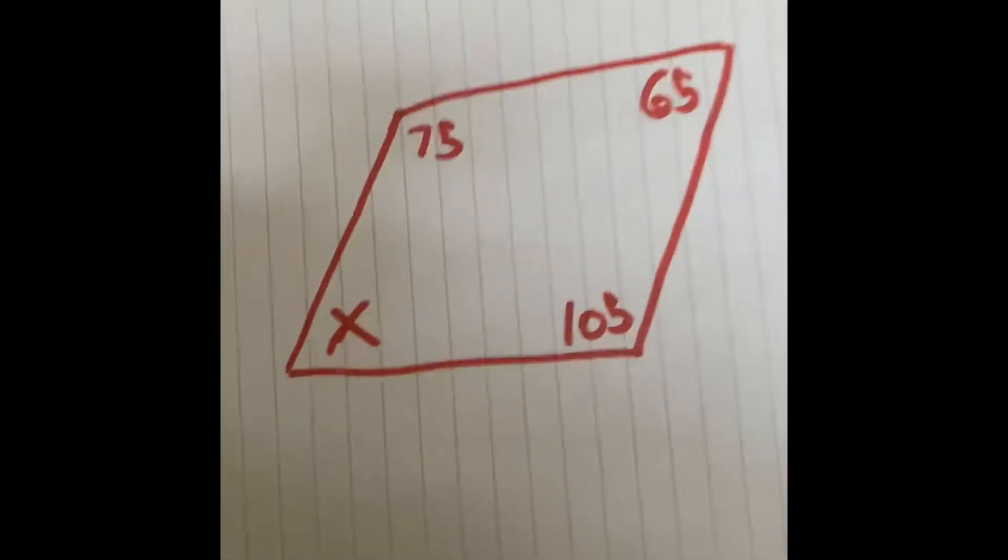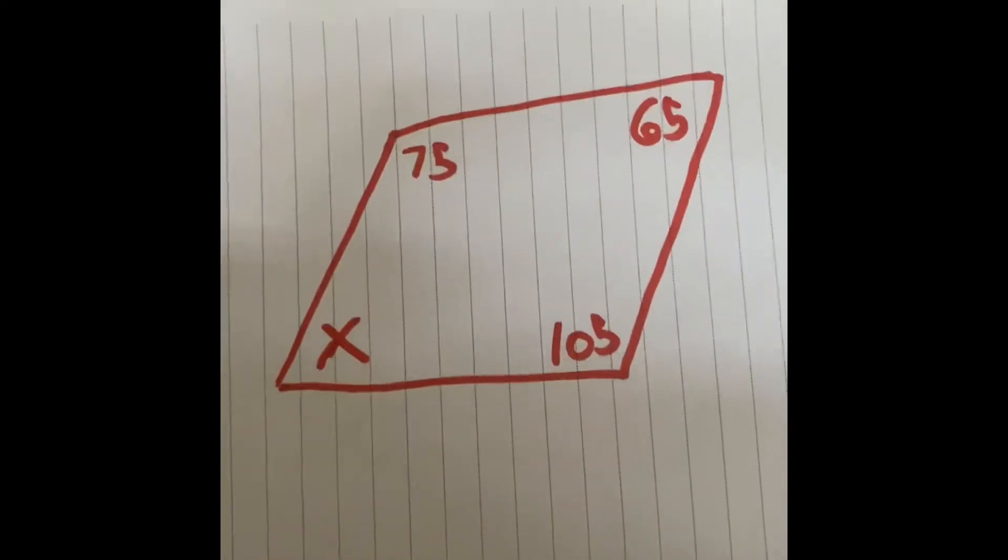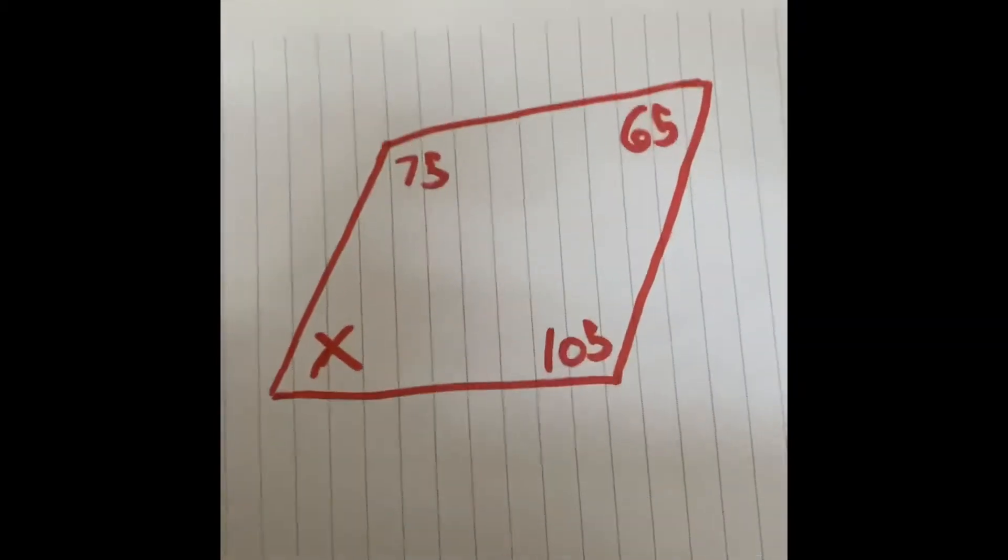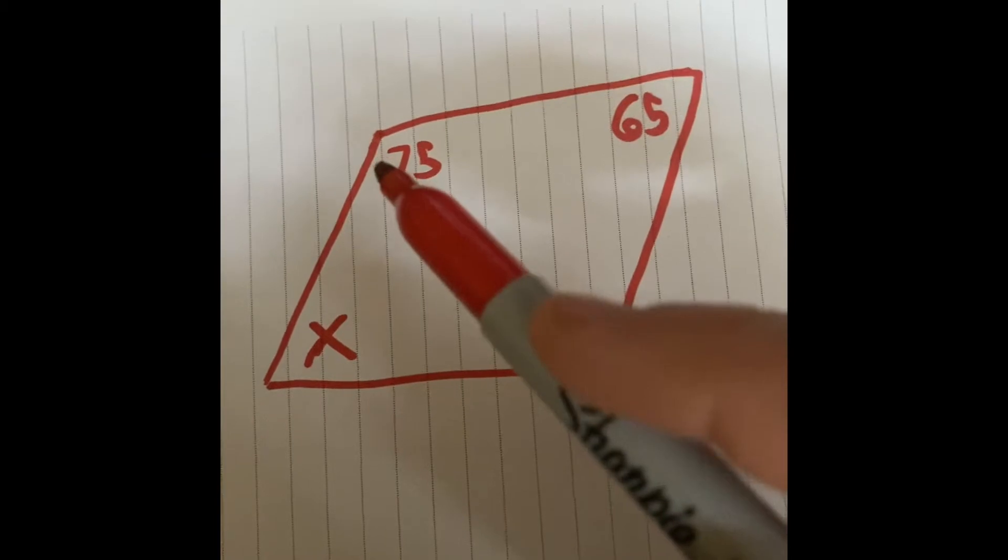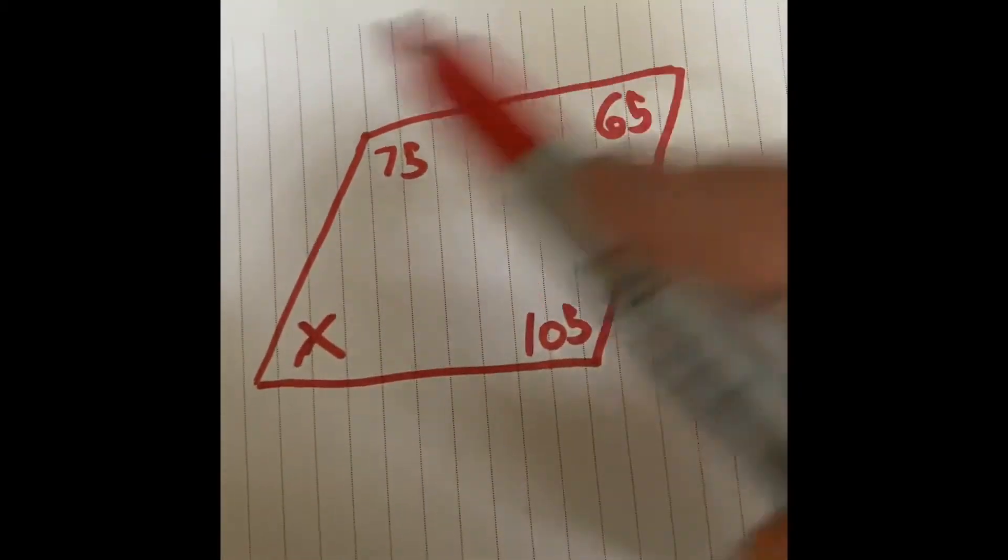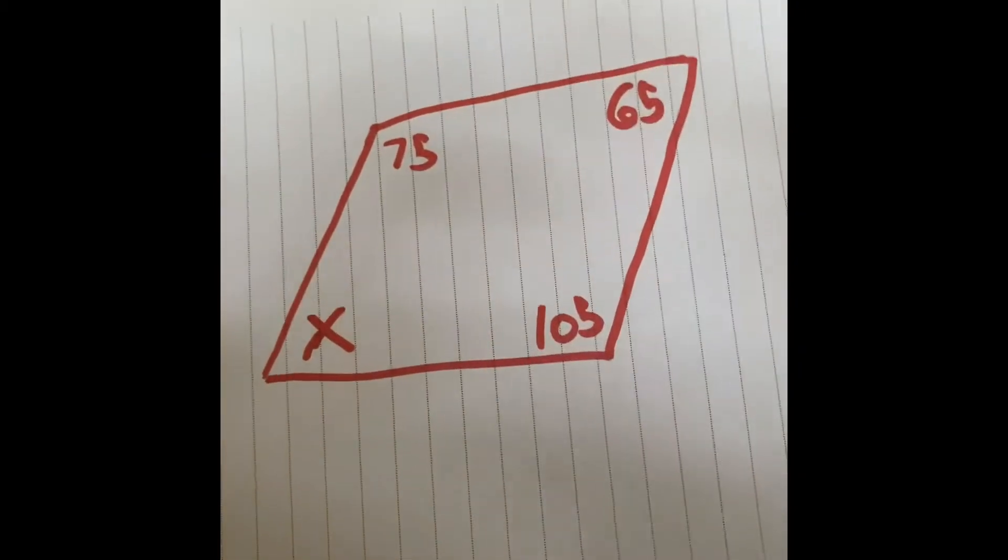Hey guys, I just want to show you two quick problems that I think will help on homework 6.8 today. The most important thing to remember when doing all of these is that anytime you have a shape with four angles, all four angle degree measurements need to add up to 360.